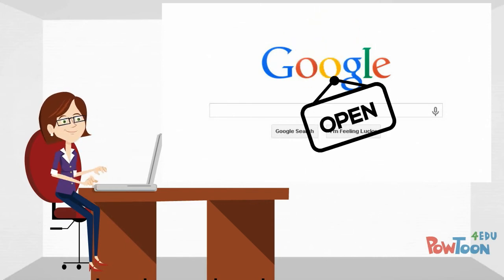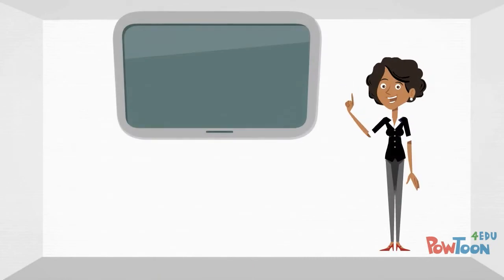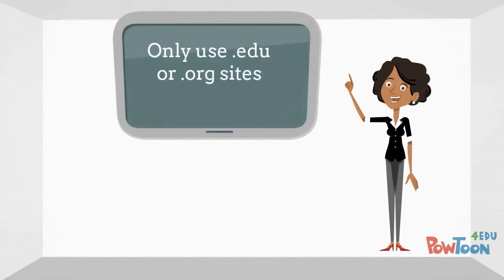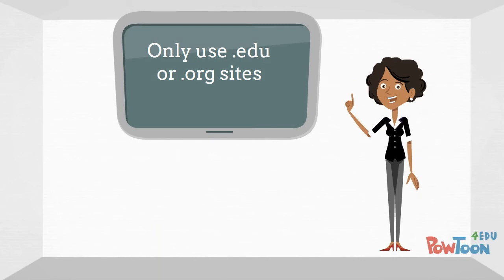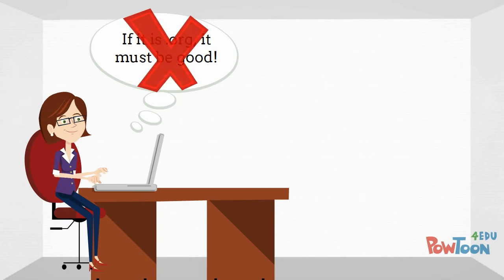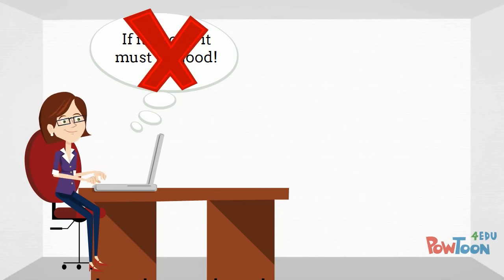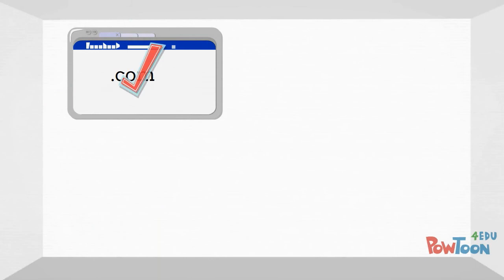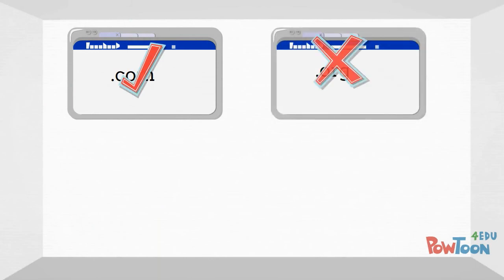Many students have been taught to rely on the domain name, such as .edu or .org, to determine whether a website is credible. While this can be valuable information, you should not base your decision on a domain name alone. There can be very good information posted on .com websites, and very poor information on .edu or .org websites.